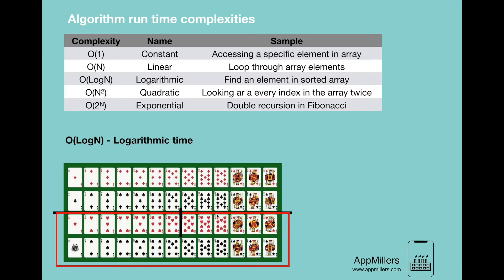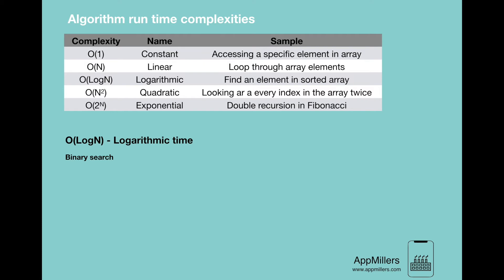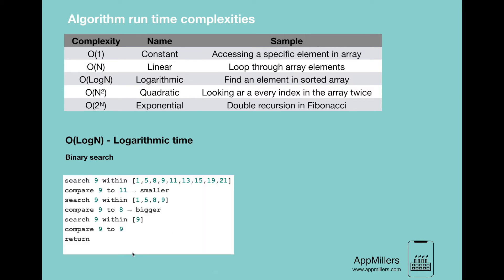We didn't have to search through every card to find it, but it also was not as simple as grabbing a random card — we searched some but not all elements. Another example of logarithmic time complexity is finding an element in a sorted array using binary search. In binary search we look for a value — say 9 — by dividing the array into two parts. The middle number is 11; since 9 is smaller than 11, we look at the left half.